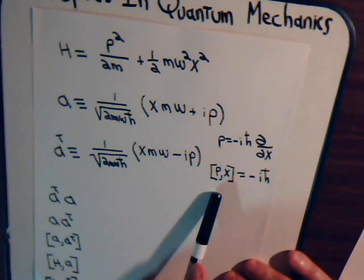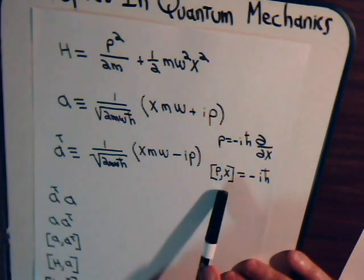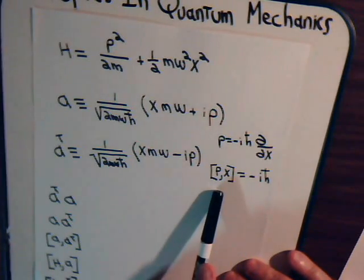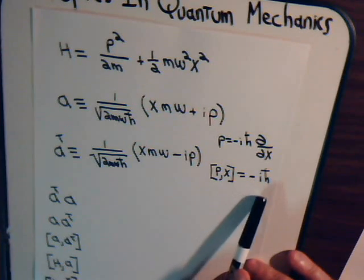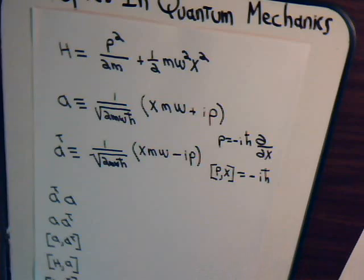And also, I think this is in video 18 or 19, where we derived this commutation relation between momentum and position, it's equal to minus i h-bar.